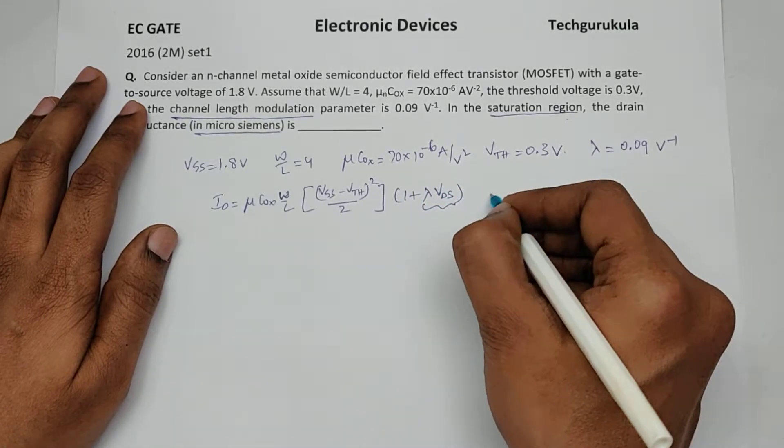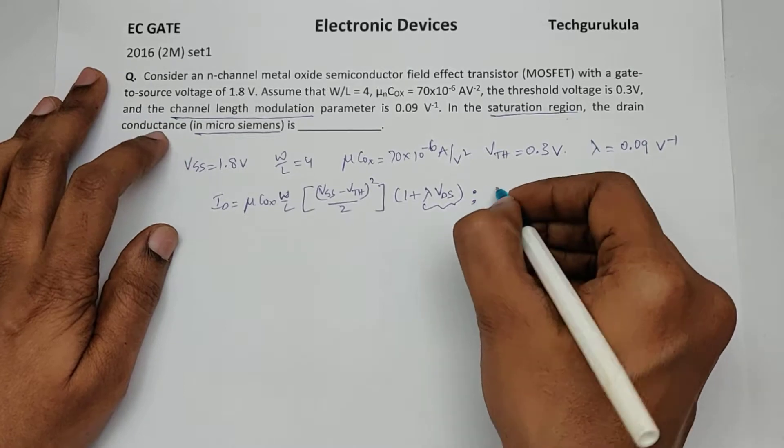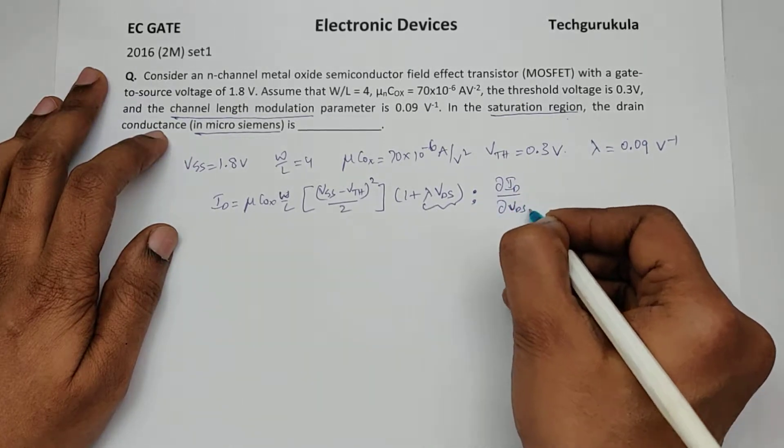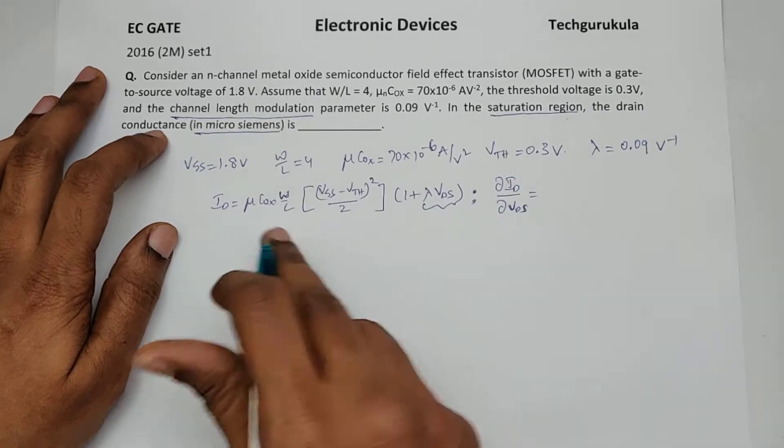Now if we take this and find what is drain conductance, drain conductance is del ID over del VDS, this is equal to if you differentiate this.